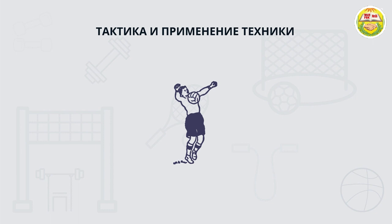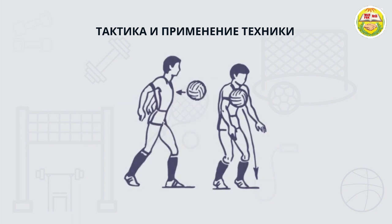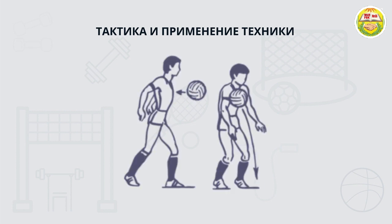Для начала нужно подготовить свое тело для принятия мяча. Для этого расставьте ноги шире, чем ширина плеч, согните в коленях, отведите туловище назад, бедро выдвиньте вперед, зафиксируйте это положение в статике на 10-15 секунд. В момент касания мяча ноги необходимо разогнуть в коленях, руки отвести назад, а грудь резко сместить вперед.